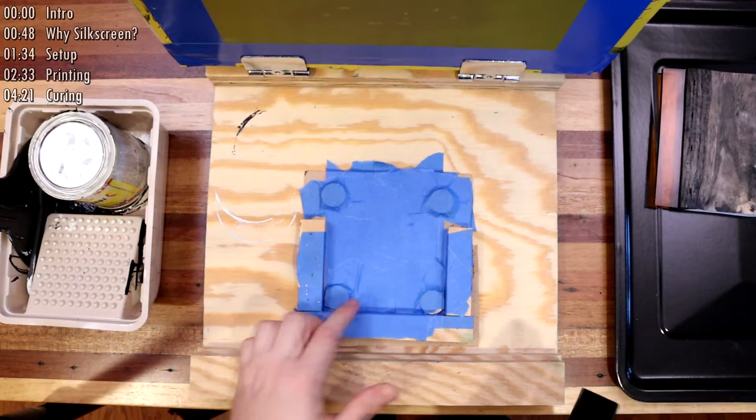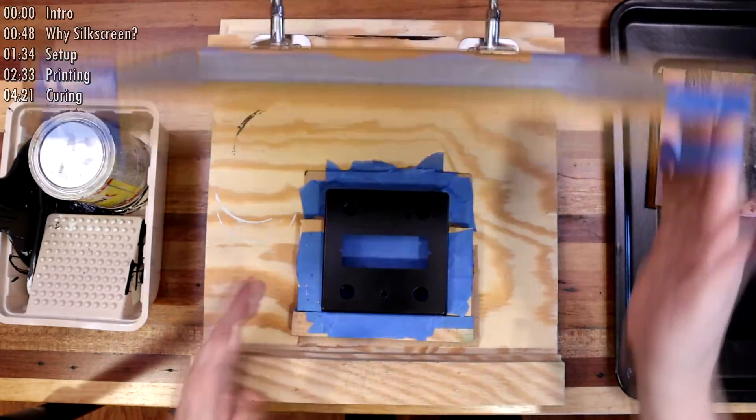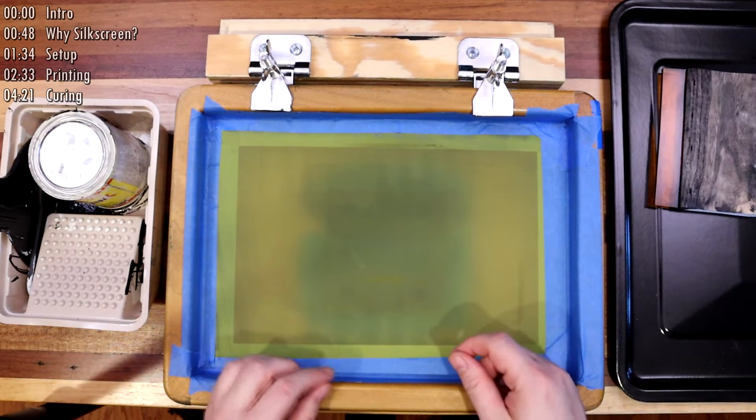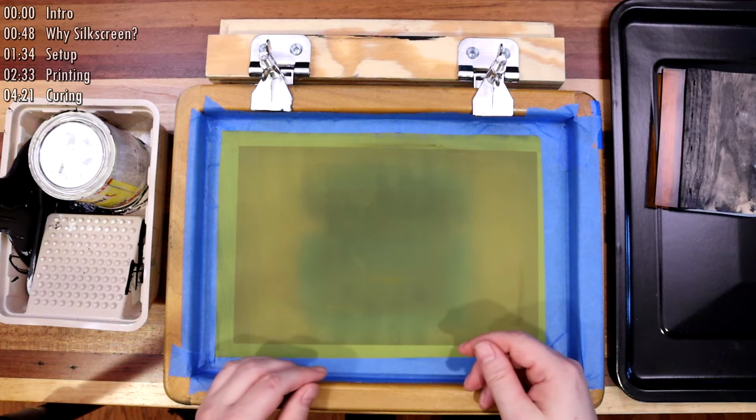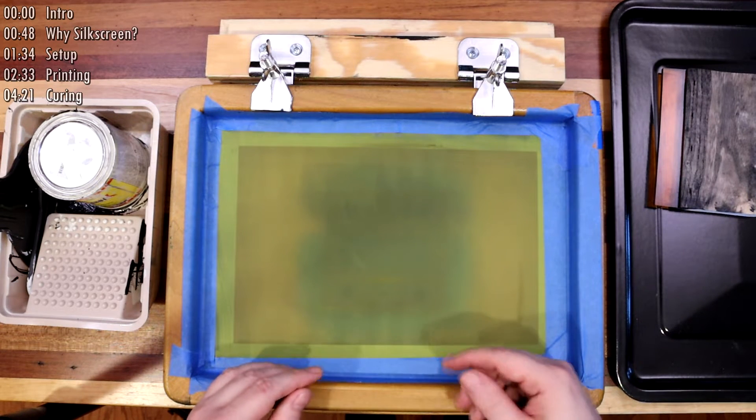Next you want to align the enclosure under the screen. Printing alignment marks directly on the screen with your artwork is a good idea. You can always use masking tape to cover those lines up so they don't let any ink through. I didn't do that with this one, which does make it a little tougher to line up.